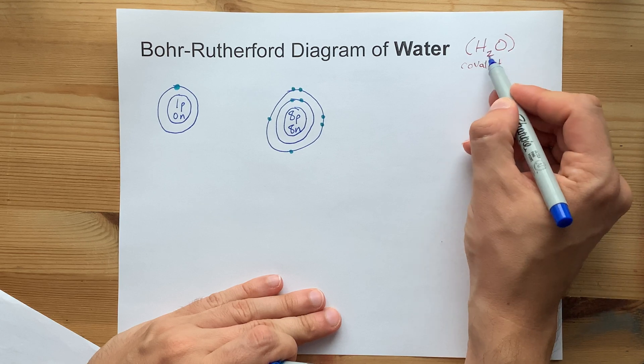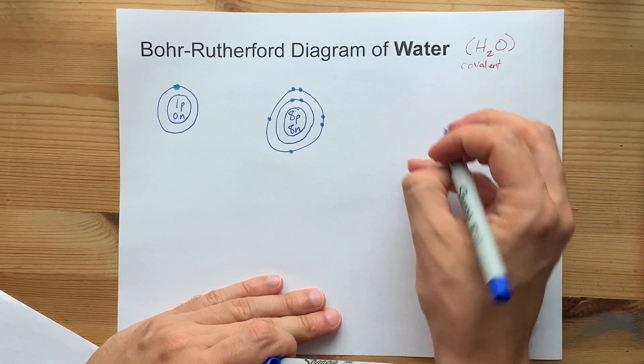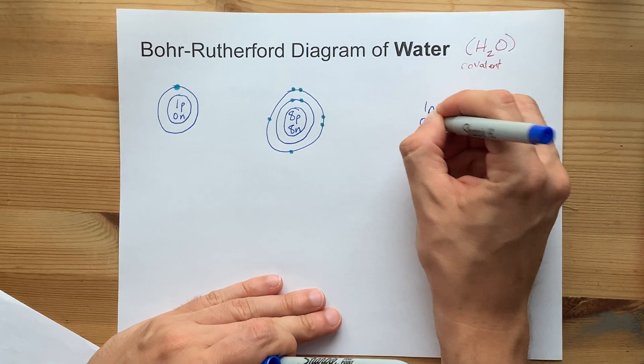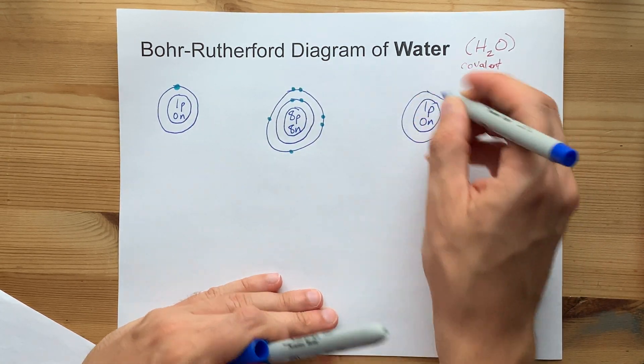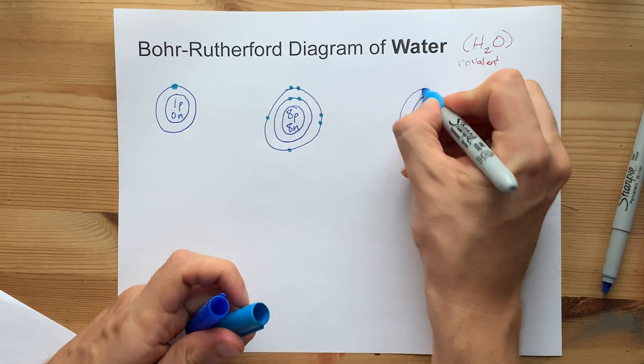Great. That's where we're at with that. We need one more hydrogen, because it's H2O. Two hydrogens, one oxygen. One P, zero N. I just copied that from over here. This is the Bohr-Rutherford diagram of hydrogen.